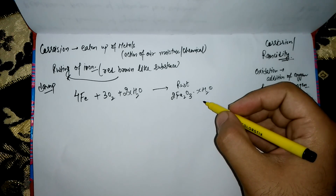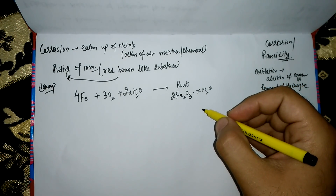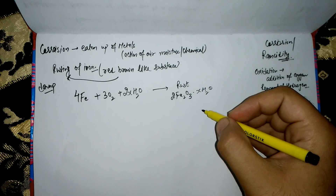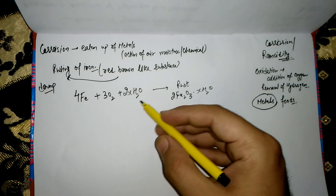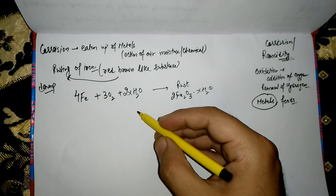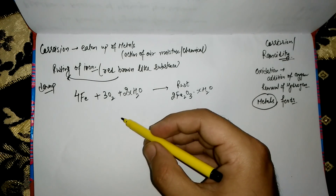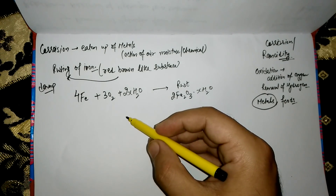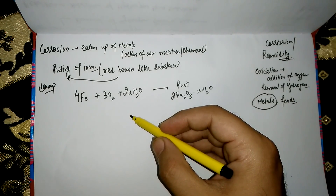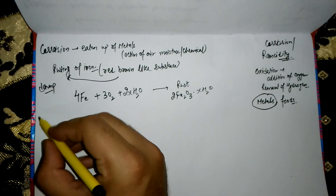Rusting of iron, if not prevented in time, will automatically eat up the metal by the action of oxygen and water. Corrosion weakens iron and steel objects and their structures such as railings, car bodies, bridges, and ships, and cuts short their life. So we need to avoid corrosion.